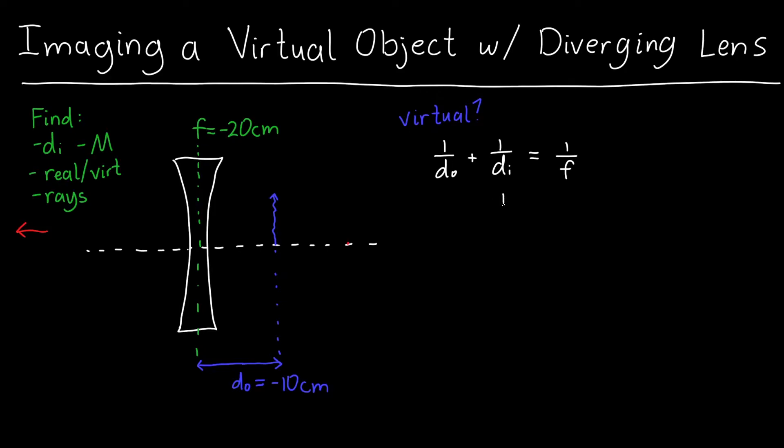And we can use this to solve for DI, which is what we want to find. It's just 1 over F minus 1 over DO all inverted. Now the tricky part about this is making sure we get all the signs right, because the focal length is negative, DO is negative, we've got a negative here. So if we're very careful, we've got a 1 over negative 20 centimeters minus 1 over negative 10 centimeters.